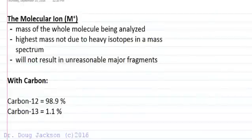Let's talk about finding the molecular ion in a mass spectrum. The molecular ion is going to be the total mass of the whole molecule, giving us the molecular weight of the compound being analyzed in its ionized form.